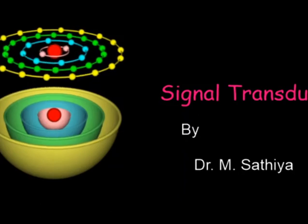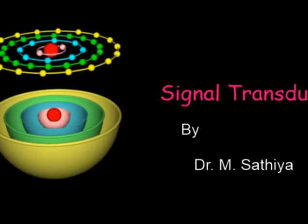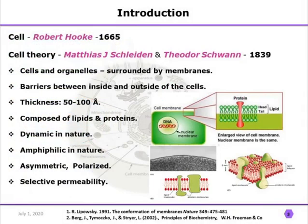As we all know, the cell is the fundamental unit of all organisms. It was discovered by Robert Hooke in 1665, and cell theory was proposed by Schleiden and Schwann in 1839. According to this theory, all cells and organelles are surrounded by membranes, which form the barrier between the inside and outside of the cell. The thickness of the membrane ranges from 50 to 100 angstroms, and they are composed of lipids and proteins.